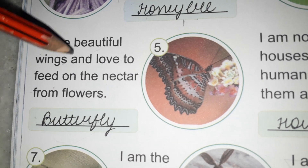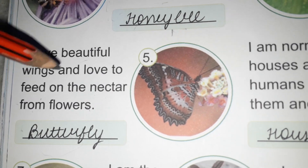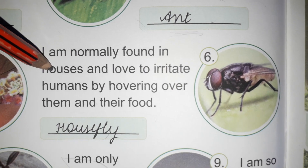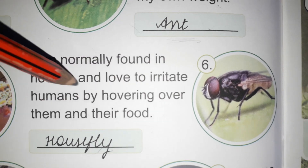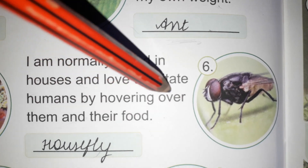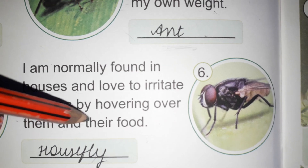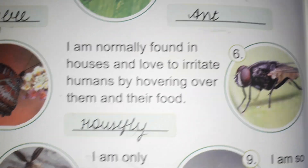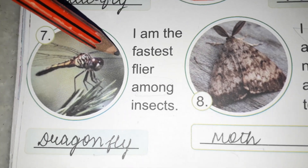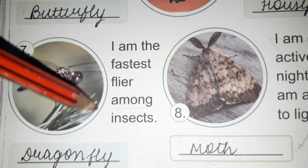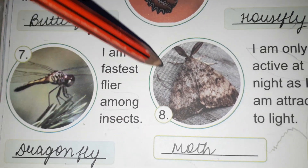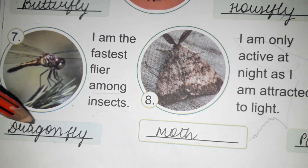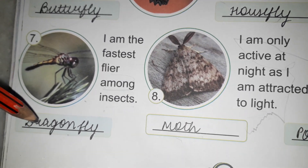Butterfly has beautiful wings. Next: I am normally found in houses. I love to irritate humans by bothering them and their food. That is called a housefly. I am the fastest flyer among insects — that is a dragonfly. That is why it is called dragonfly.